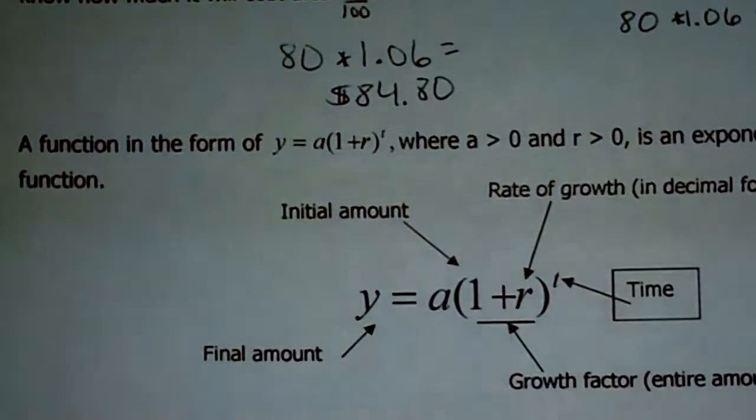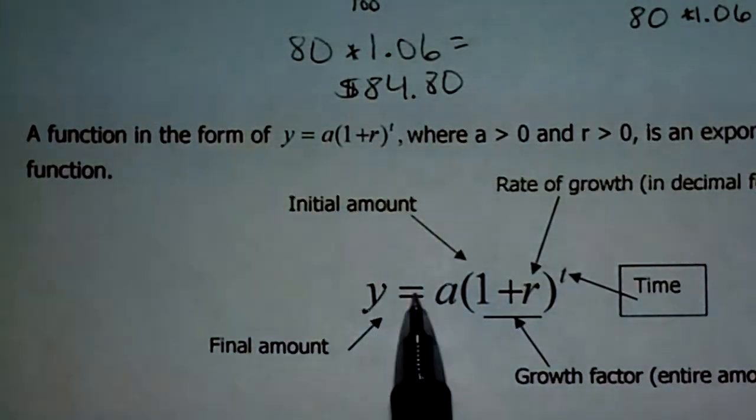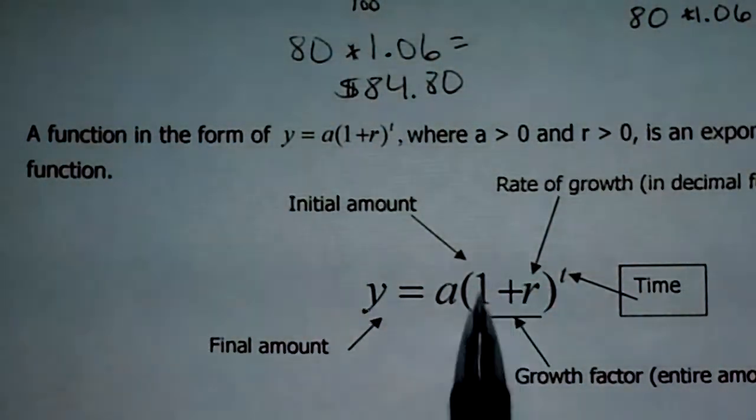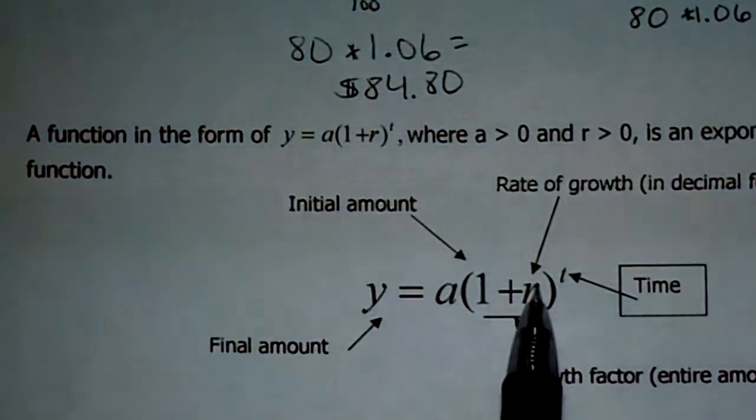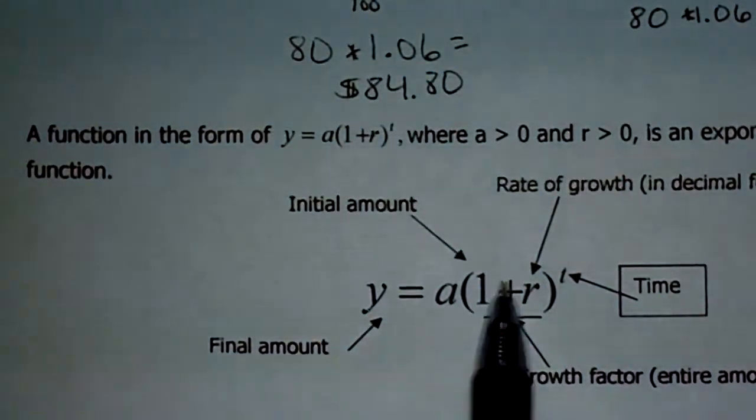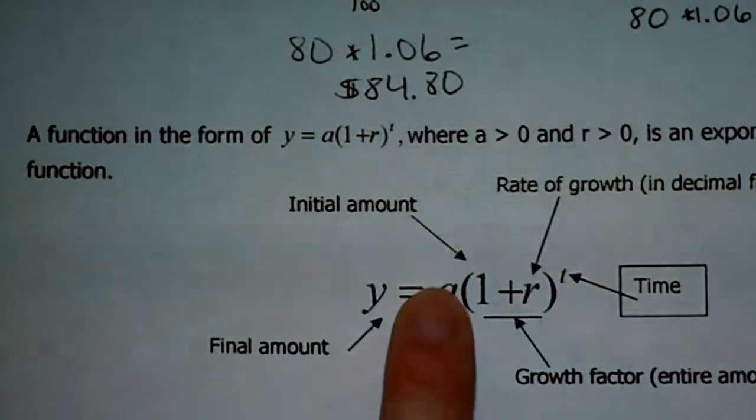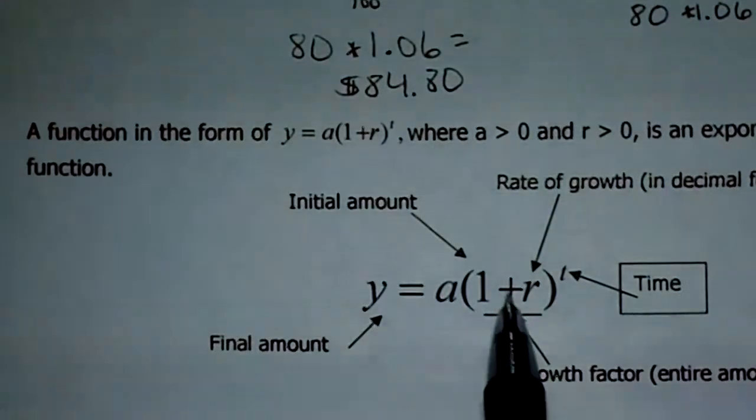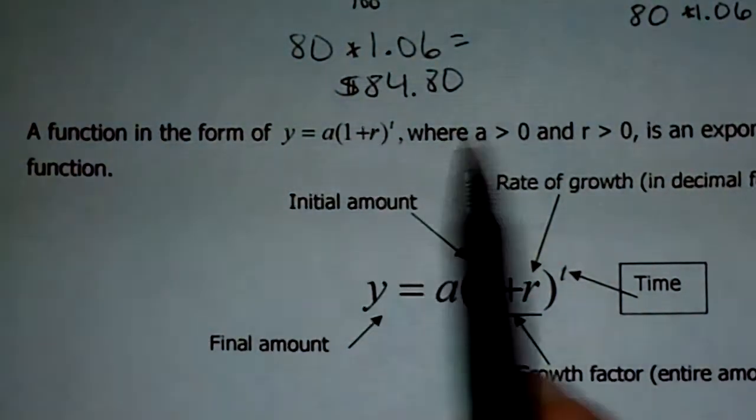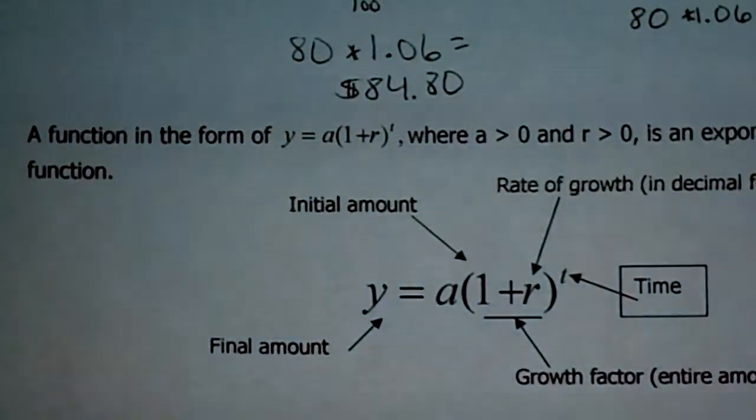Alright. So take a look. A function in the form of. Now this isn't really anything different. This is still just like Y equals, there's my A, but this amount right here is like my B. And there's the 1 plus my rate of growth in decimal form that we just had talked about. So that's your B. T is used for time. Doesn't X represent time? So this is really just like Y equals A times the quantity of B to the X. Don't let too much throw you off. Okay. It's just this time you have to mess with the B a little bit more. So in this form, A is greater than 0, R is greater than 0. This is exponential growth.